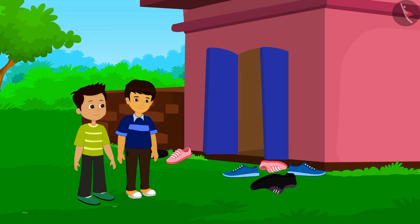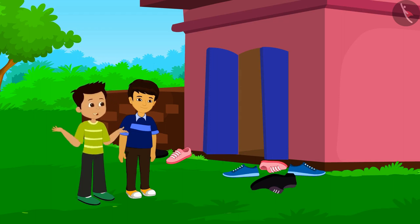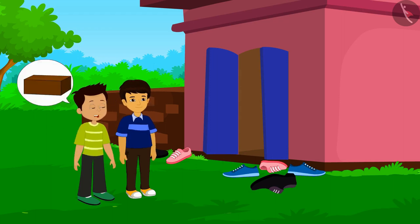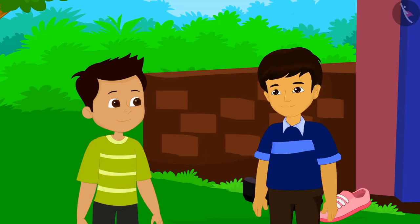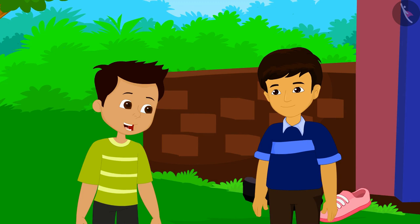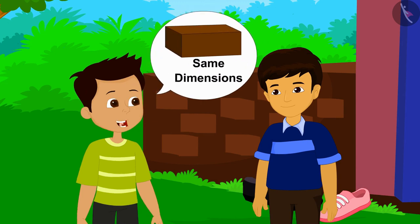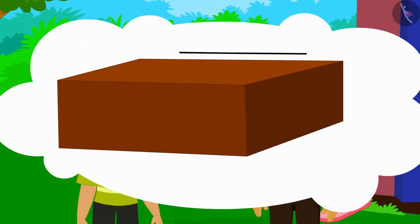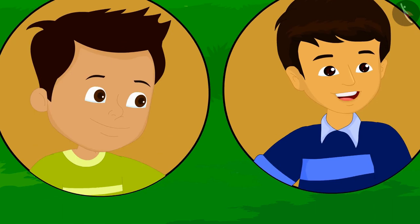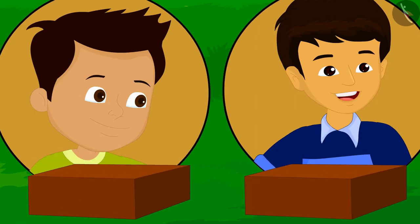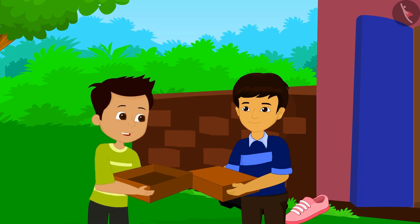Thomas says he has been thinking for a long time about making cardboard boxes to keep his shoes. Manas offers to help, and the two friends decide to make boxes of exactly the same dimensions — length 35 centimeters, width 25 centimeters, and height 12 centimeters.